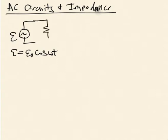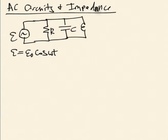Let's consider what this does to various circuit elements. I'm going to consider a set of parallel circuit elements. Each one of these will see the AC EMF independently, producing a situation where current will flow back and forth out of this power supply. Part of that current will go through the resistor, part through the capacitor, part through the inductor. The amount of current that flows will depend on how fast I oscillate — the frequency omega.